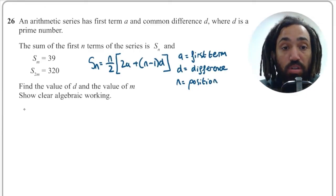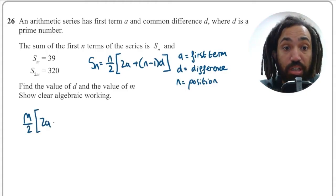So what have they given to us? They tell us that Sm is equal to 39. So I can write that the position M over 2 multiplied by 2 lots of the first term, which we have no idea what it is, plus M again is the position, minus 1 multiplied by D and that's equal to 39.